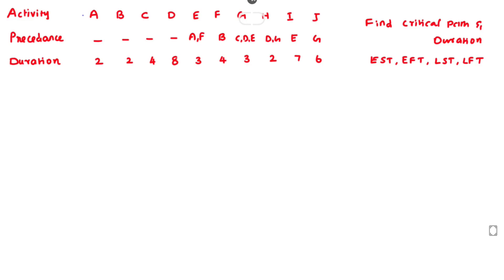Hello friends, welcome to Civil Engineering Exam. Today we are going to see a problem related with construction planning and scheduling in the topic of Critical Path Method. The network path containing the maximum duration is the critical path, and that duration is called the project duration. Activities A, B, C, D, E, F, G, H, I, and J are given along with their precedence relationships and durations.